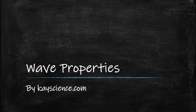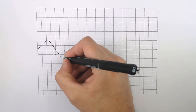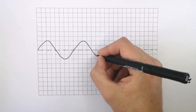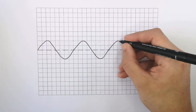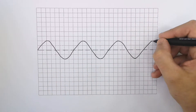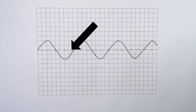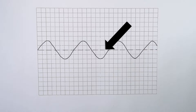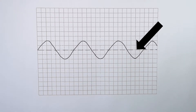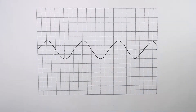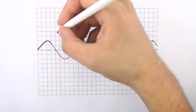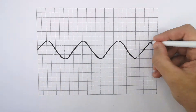Introducing Wave Properties by KScience.com. What I'm drawing now is a transverse wave, and the dotted line going through the wave is the undisturbed position.